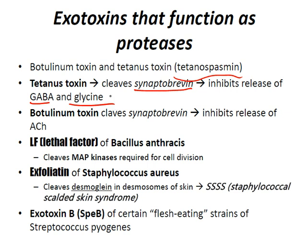GABA is the main inhibitory neurotransmitter in the brain; glycine is the main inhibitory neurotransmitter in the spinal cord. The botulism toxin also cleaves synaptobrevin and inhibits the release of acetylcholine. You also have the lethal factor of Bacillus anthracis, which cleaves MAP kinases required for cellular division, thereby disrupting cellular division. You have exfoliatin of Staphylococcus aureus, which cleaves desmoglein of skin, leading to staphylococcal scalded skin syndrome.